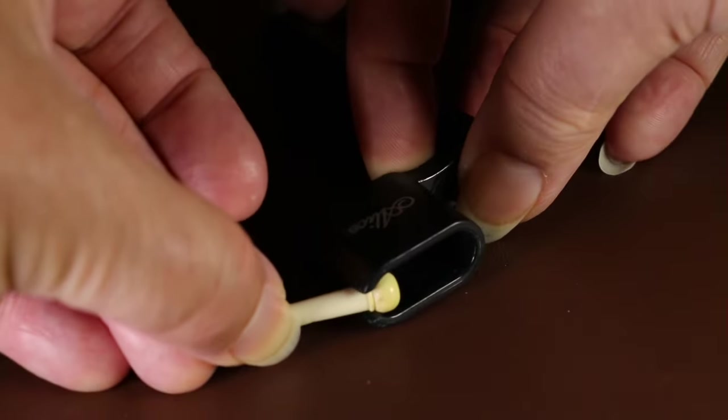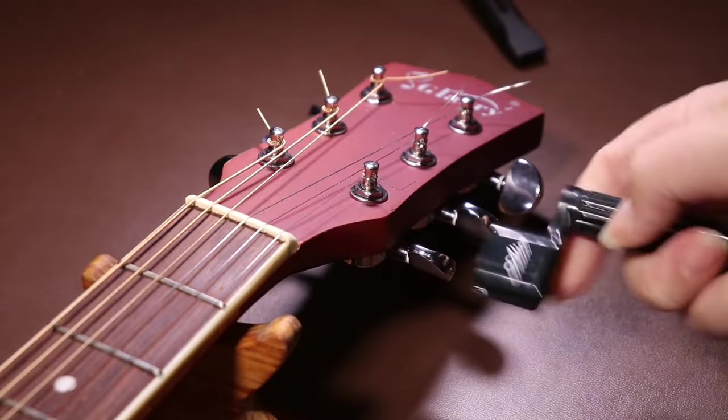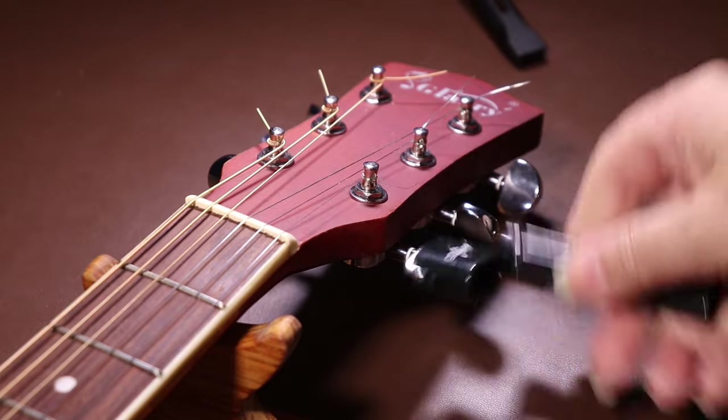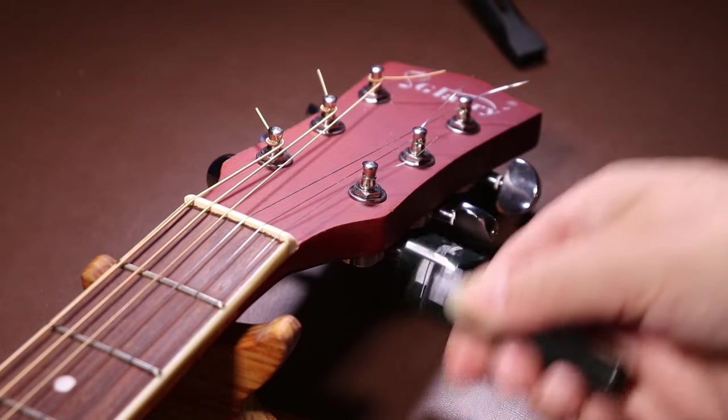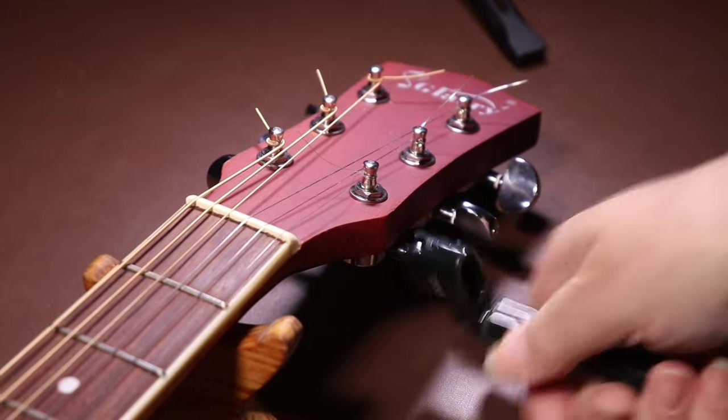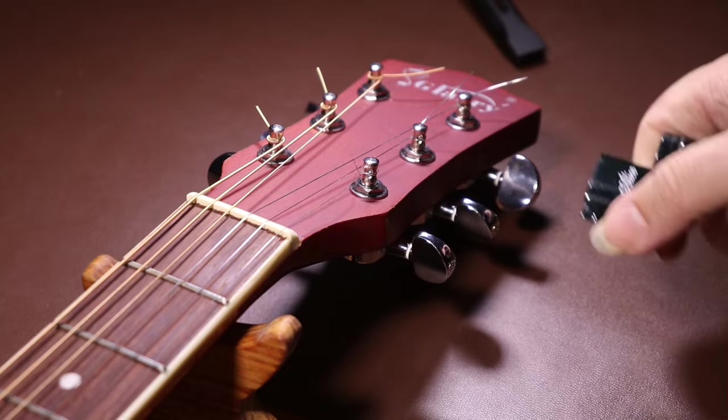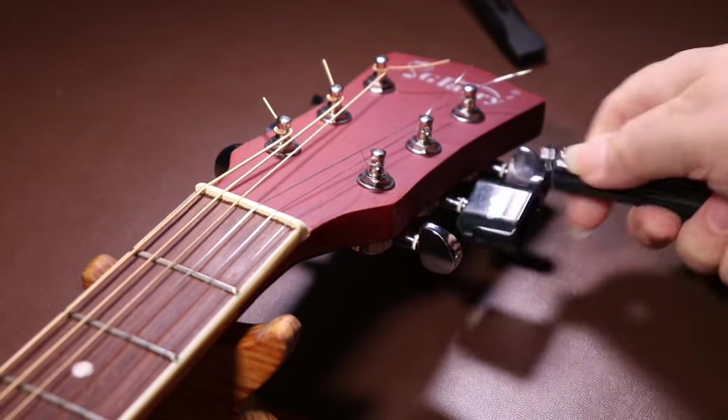However, quite often, I find these don't work too well. And all we have to do with a string winder is put it over the machine head thumb grip. And then use it to unwind the strings more quickly than we would do if we did it by hand. Obviously, you can do it just as well by hand. It just takes a little bit longer.